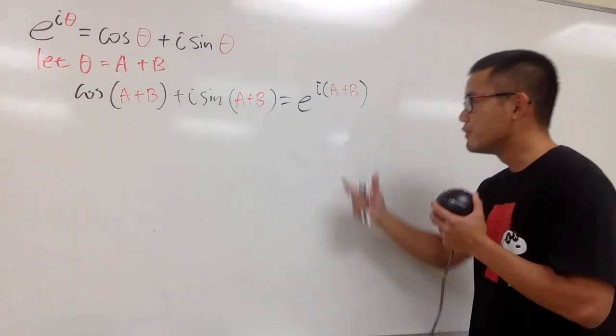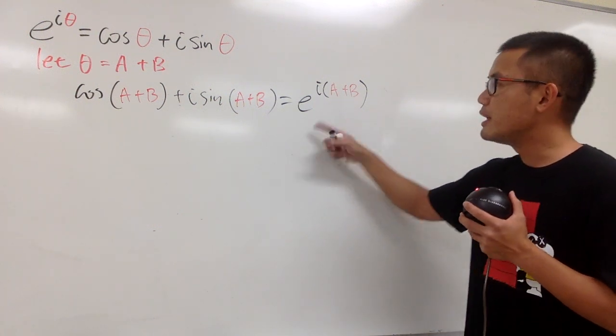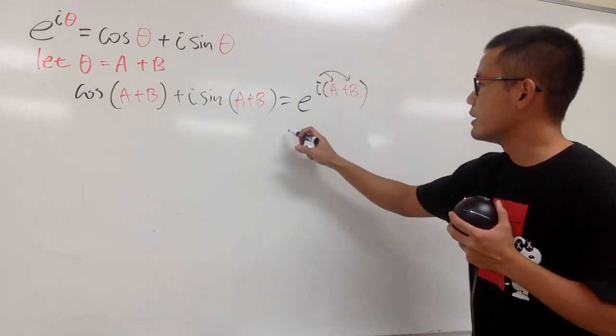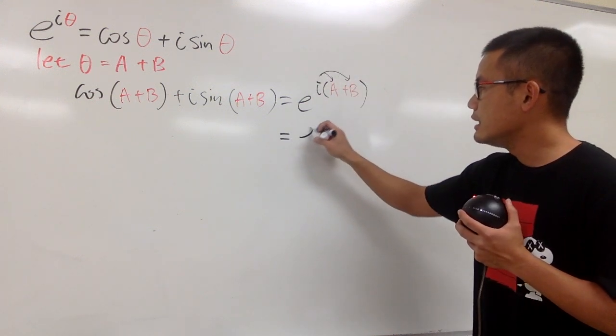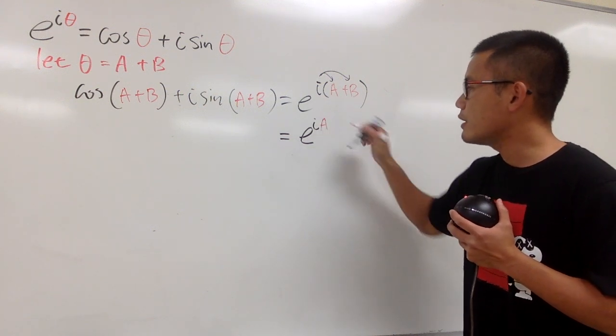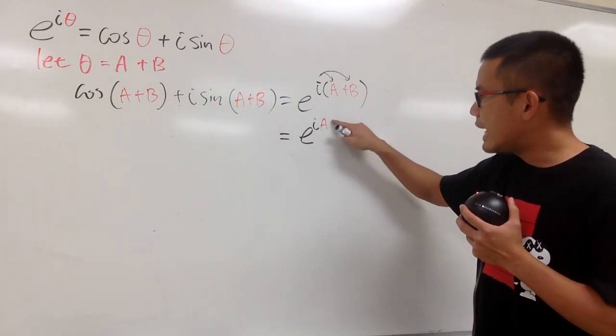And now, I would like to focus on this side here, especially for the exponent. Let me go ahead and distribute the i into the exponent. So, we will have e to the i a, right? So let me just put that down right here. And then, we will have to add i b.